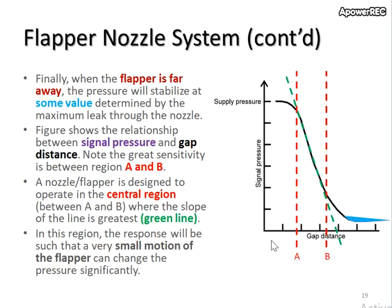This slide shows the graph representing signal pressure versus gap distance. After the flapper is moved away from the nozzle, the pressure of the signal will drop down and stabilize at some minimum value. This value is determined by the nozzle.